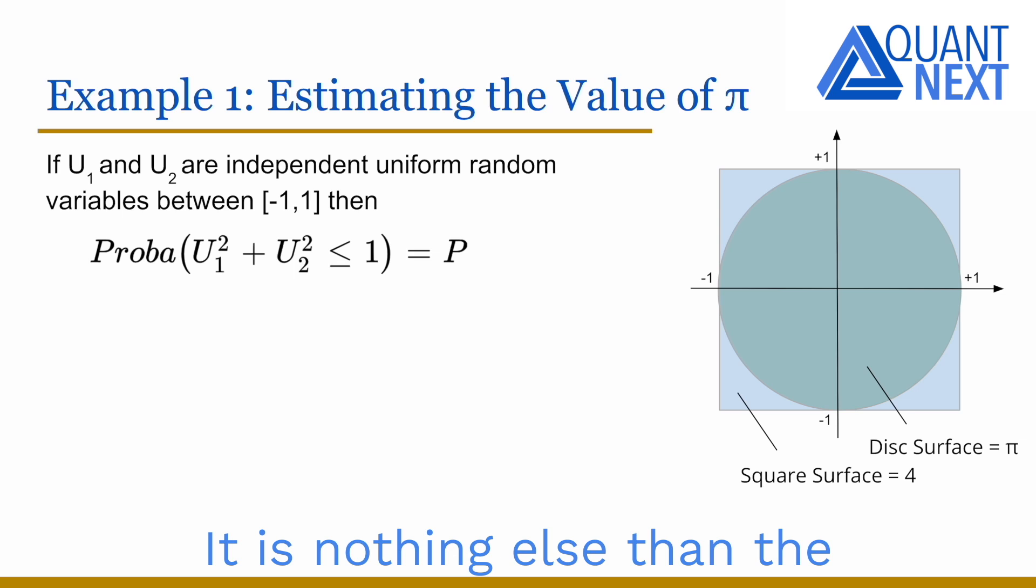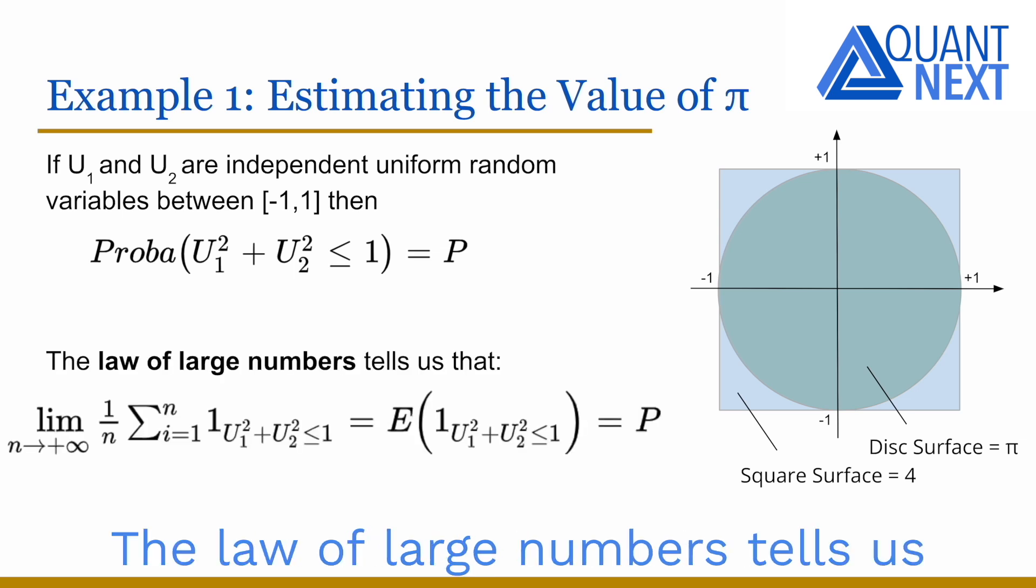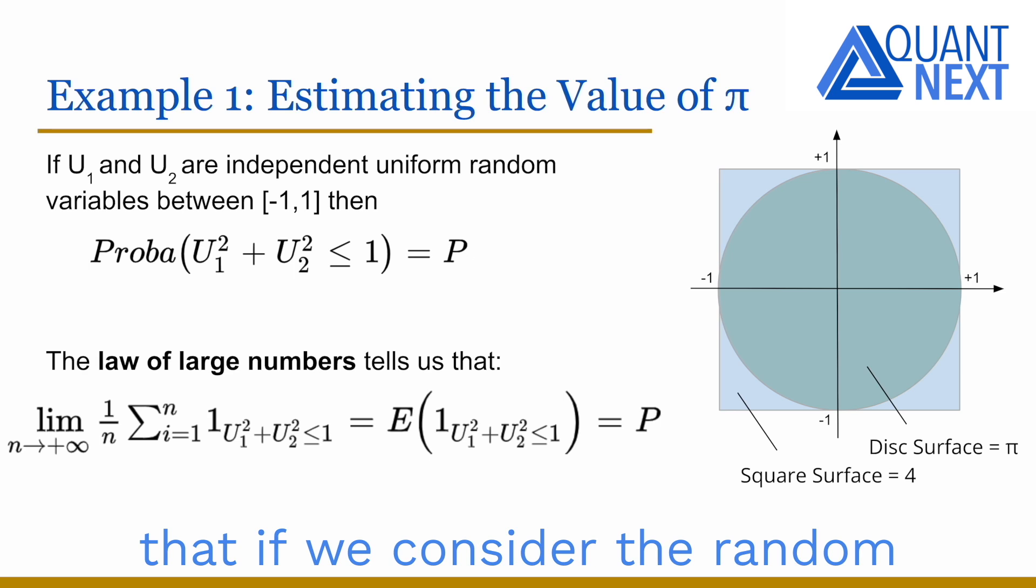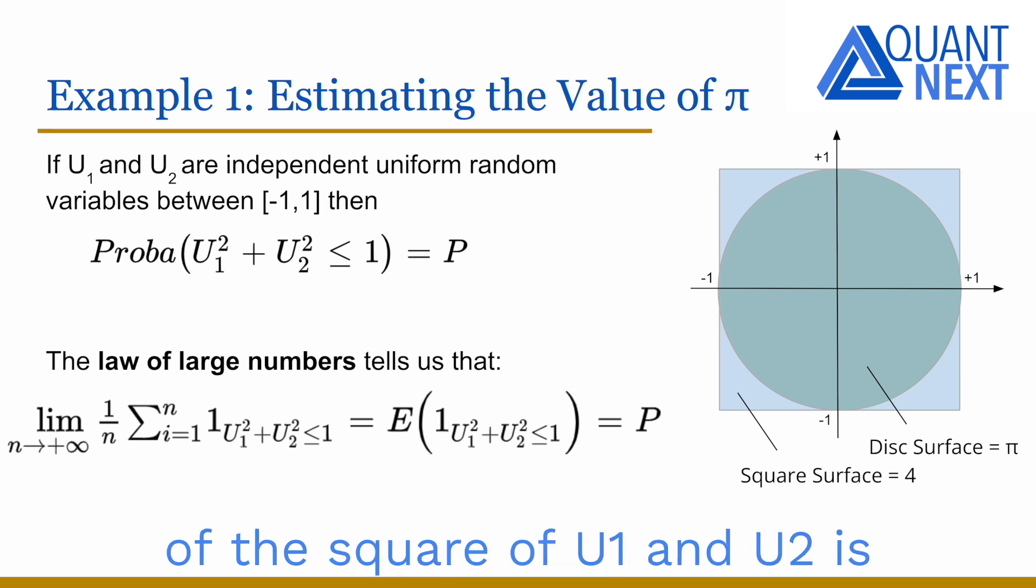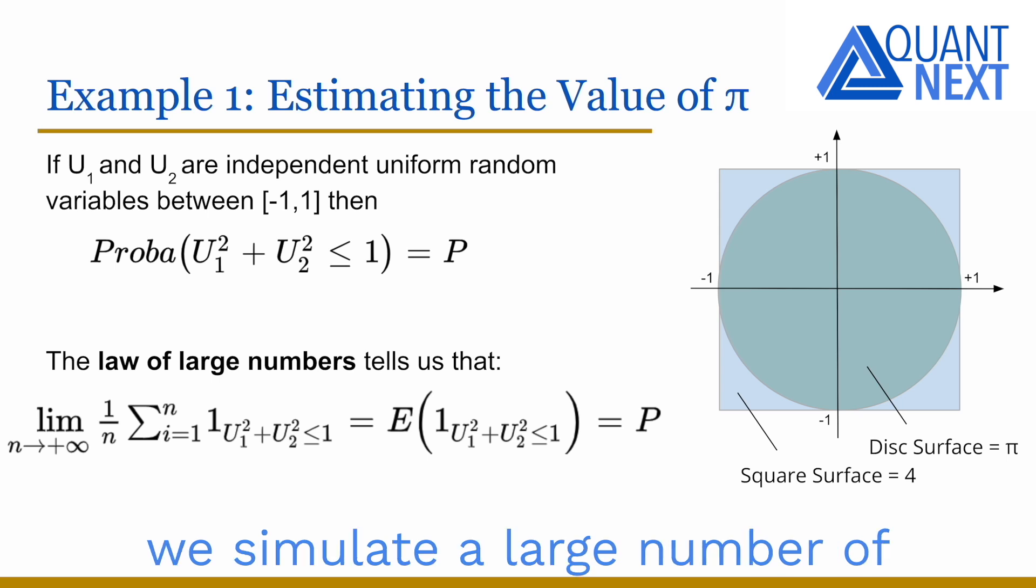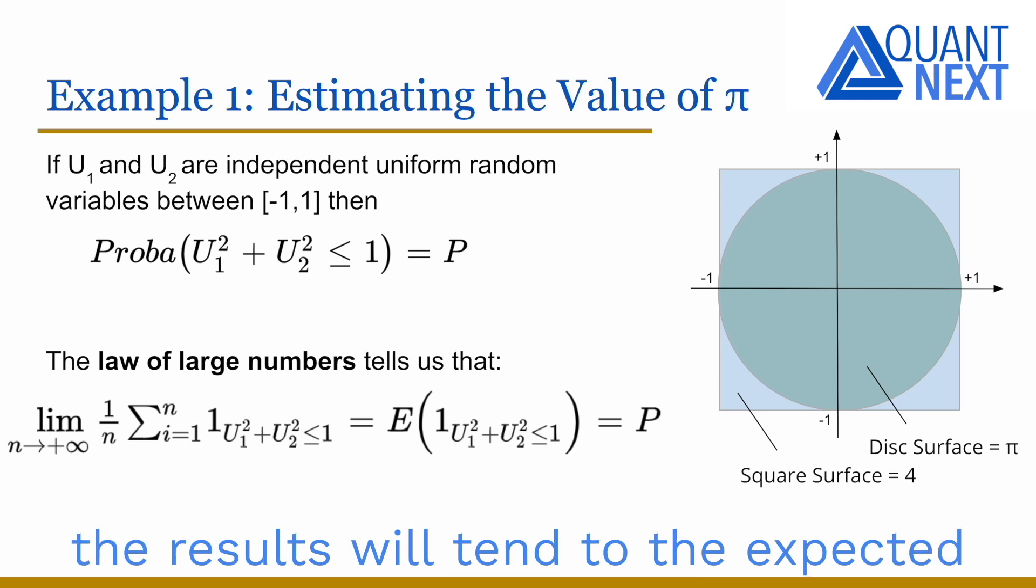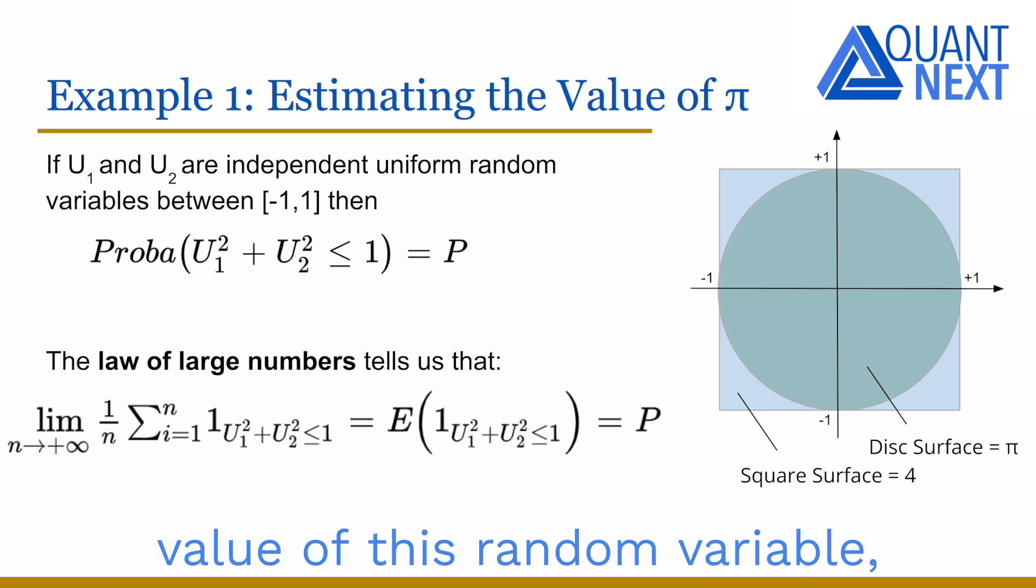It is nothing else than the mathematic translation of what we said before. The law of large numbers tells us that if we consider the random variable equals to one if the sum of the square of u1 and u2 is below one and zero otherwise and we simulate a large number of times this, the average of the results will turn to the expected value of this random variable which is equal to p. This is the average of a Bernoulli distribution.